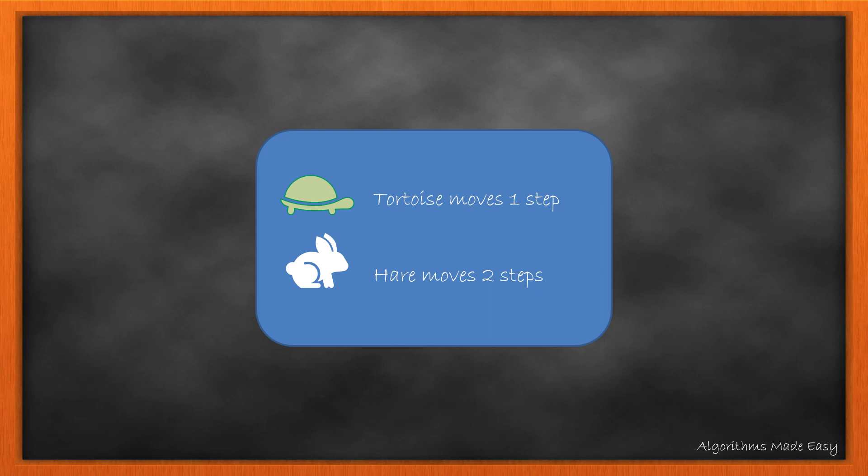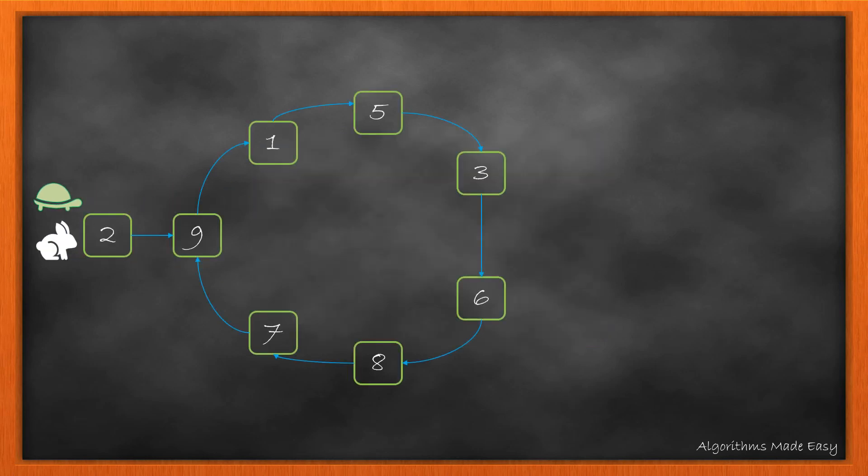Now, we will take two pointers, hare and tortoise. A tortoise will move one step at a time, while the hare will move two steps. Initially, the hare and tortoise will be at the start. In the first iteration, the tortoise will move one step and hare will move two steps. Again, the same. We will repeat this till the hare and tortoise come at the same element.